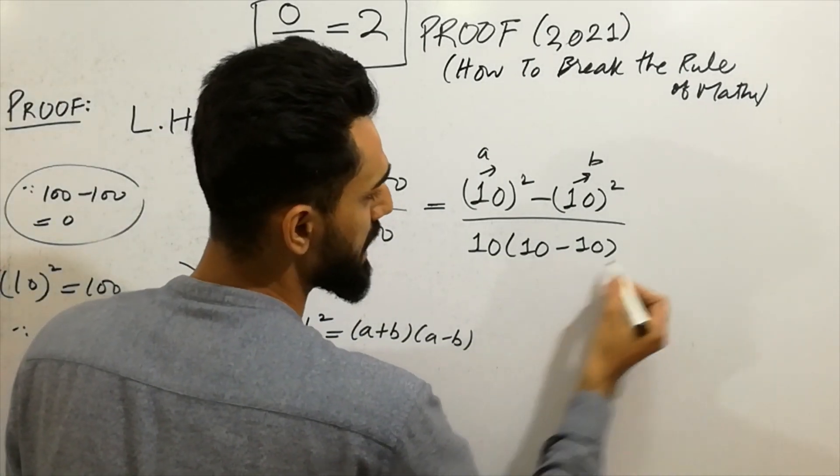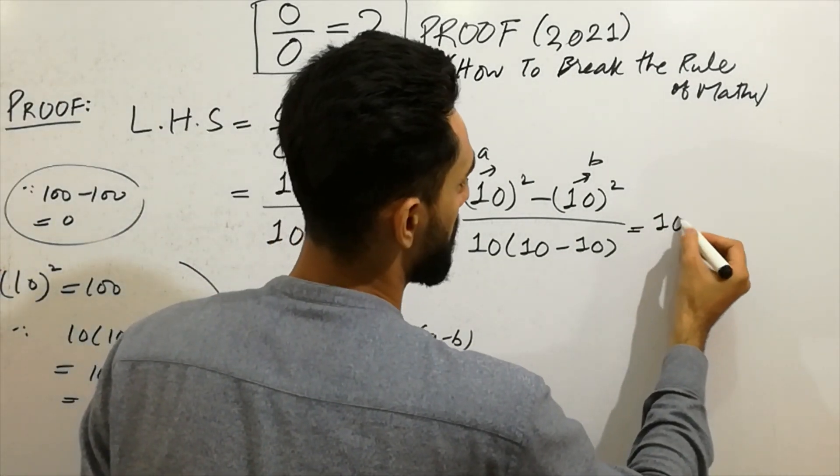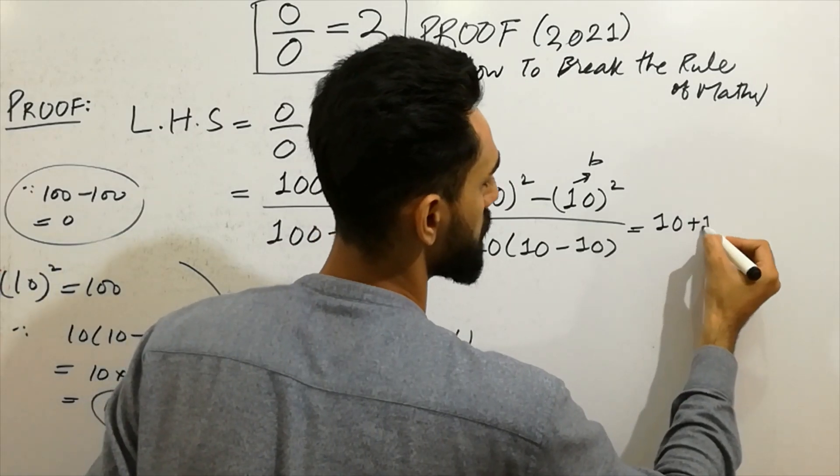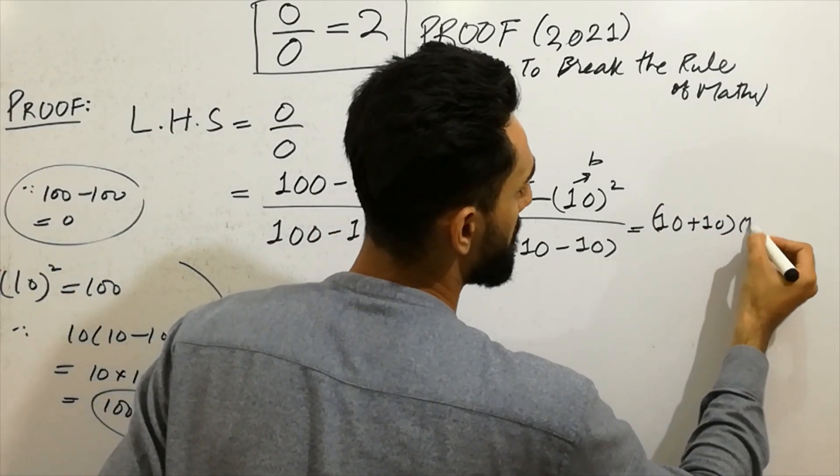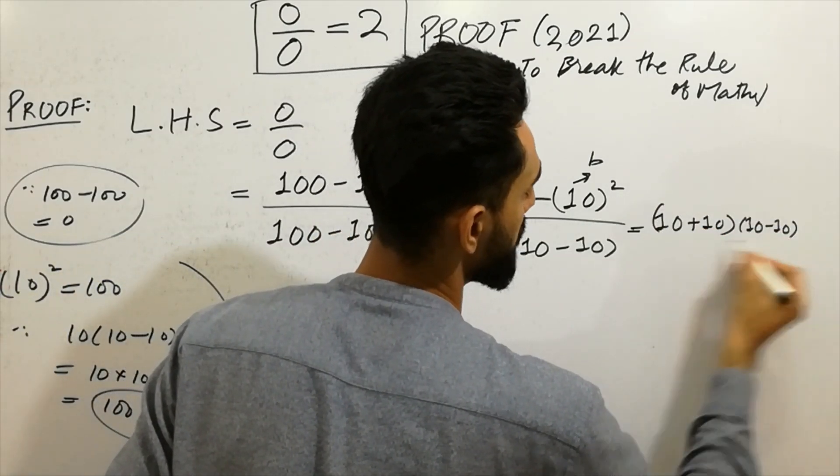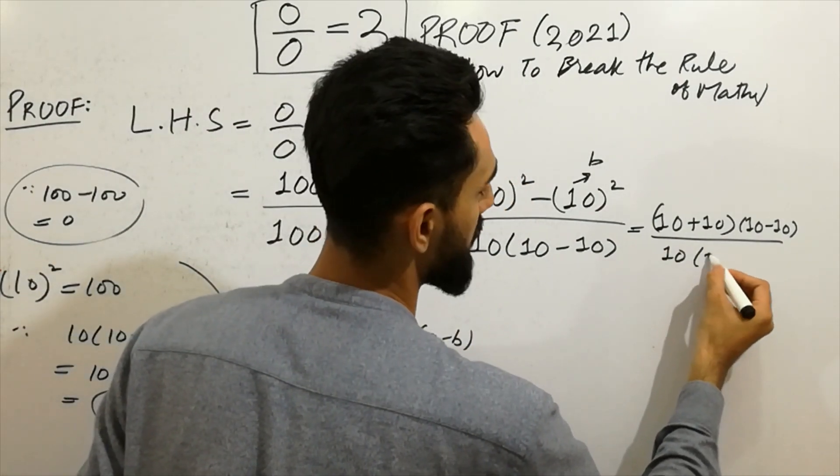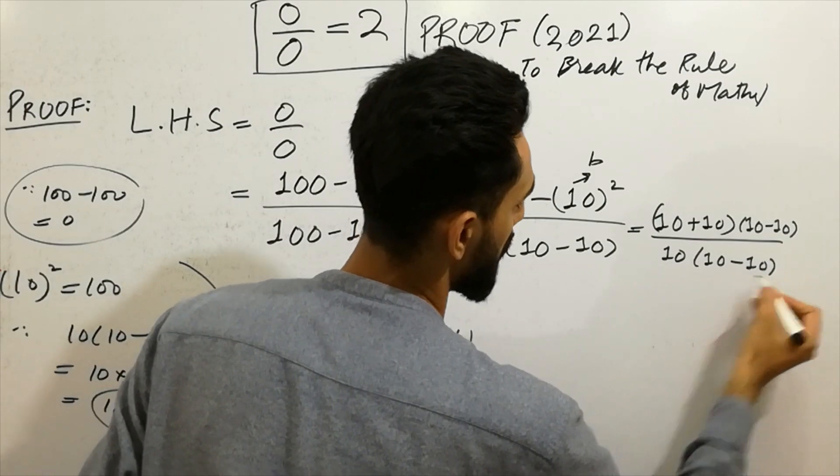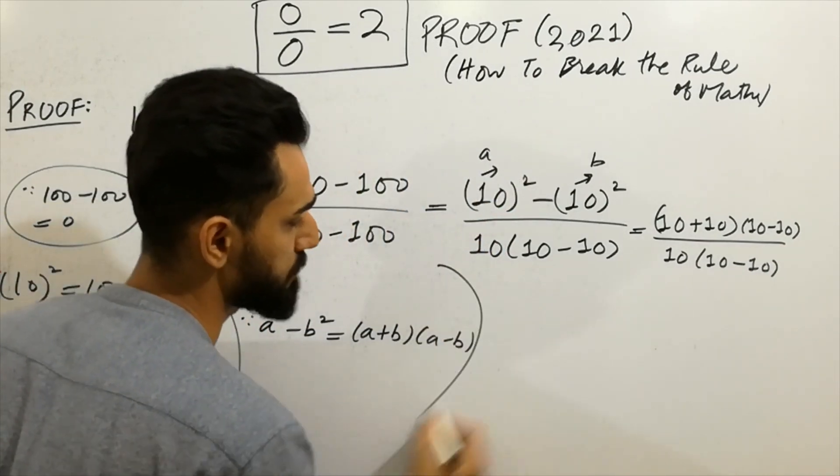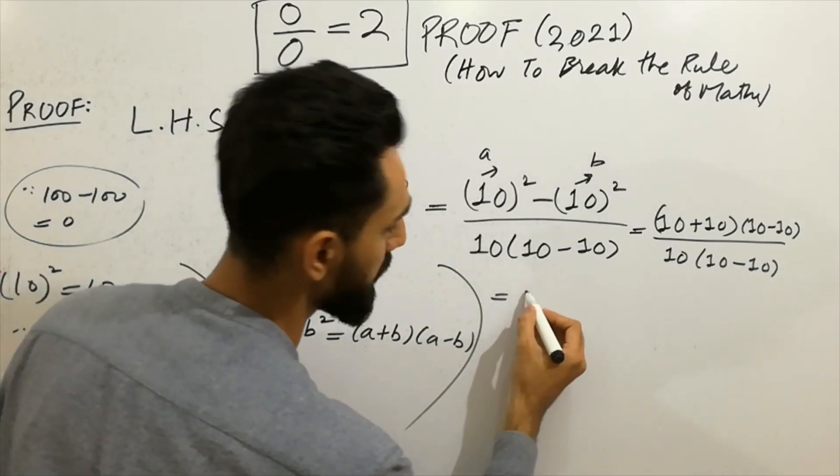Divided by 10 as it is. 10 minus 10 will be as it is. So now our next step will be here. Now you can note that I write again.